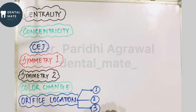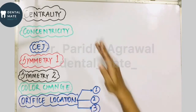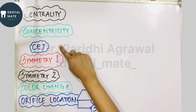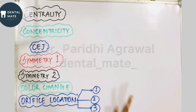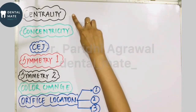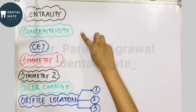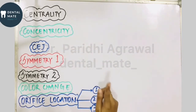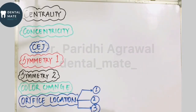The nine laws are: law of centrality, law of concentricity, law of CEJ — these are the first three. After that are law of symmetry one, law of symmetry two, law of color change, and three laws for orifice location. First, we'll be talking about the law of centrality.